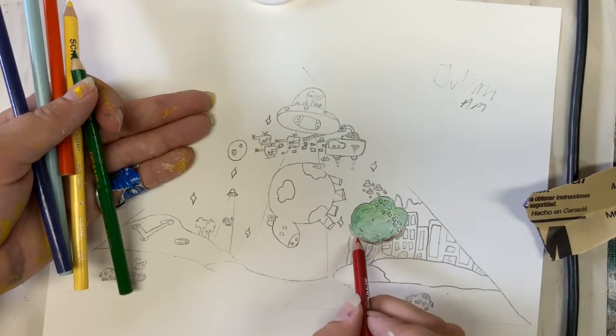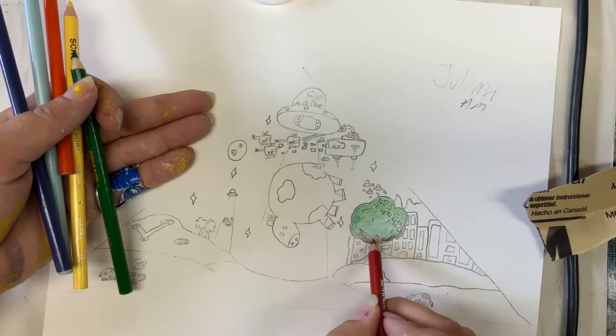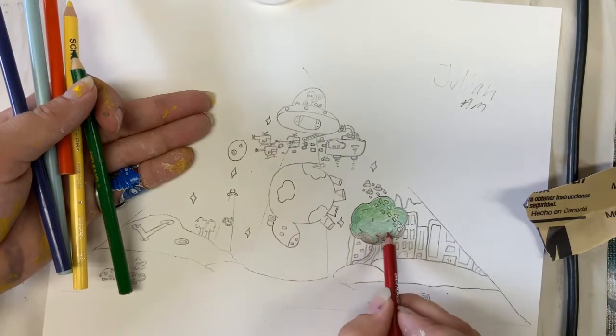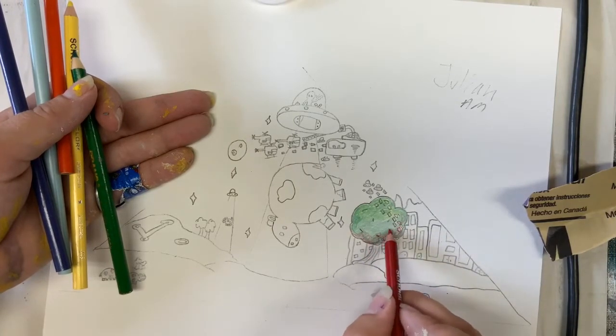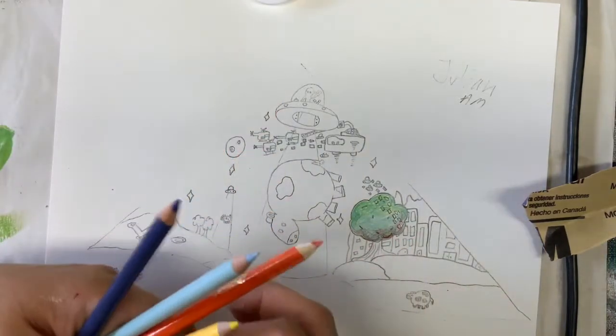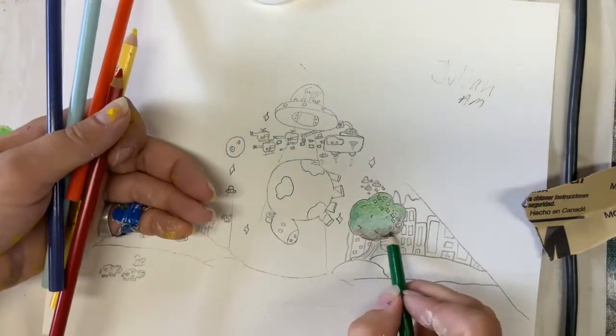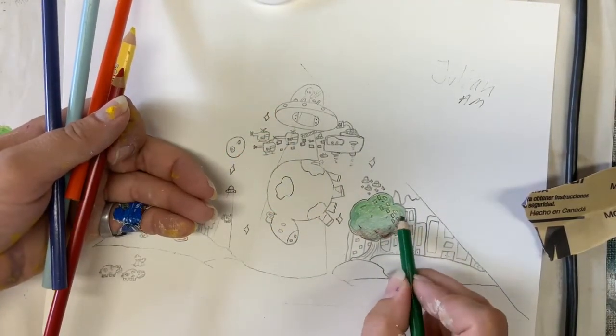But if you use an opposite color really lightly, you can get a nice shadow and really make your work look 3D. So if it gets too red, all I have to do is come back with some green.